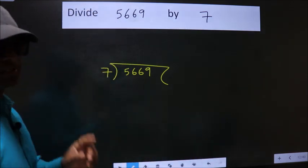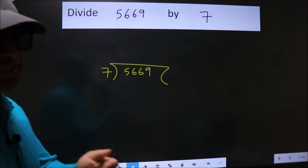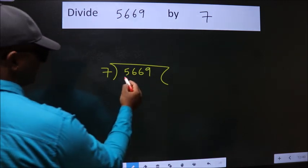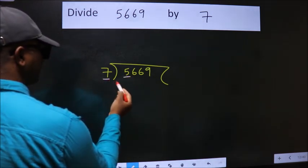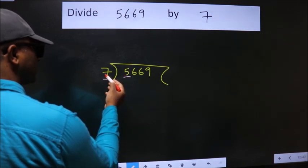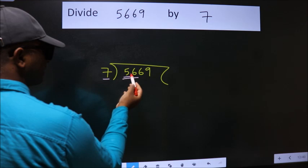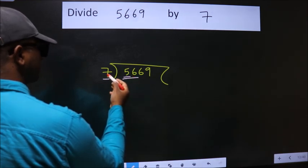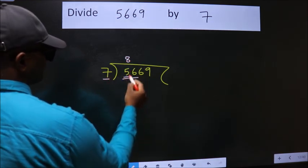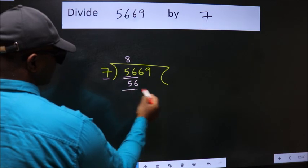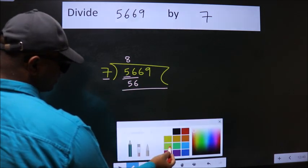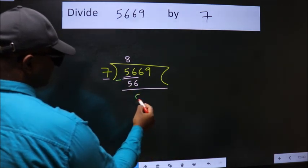This is your step one. Next, here we have 5. 5 is smaller than 7, so we should take two numbers: 56. When do we get 56 in 7 table? 7 times 8 is 56. Now we should subtract, we get zero.